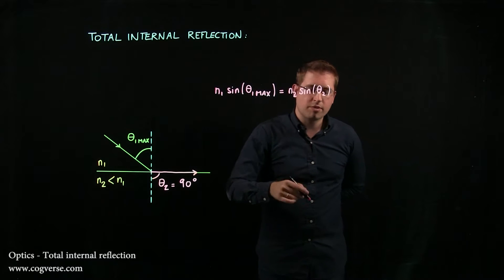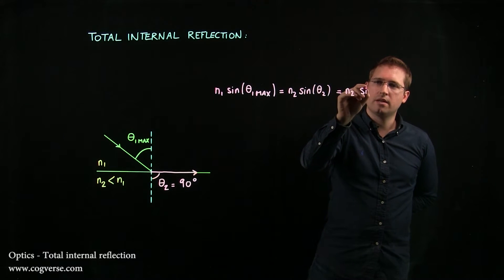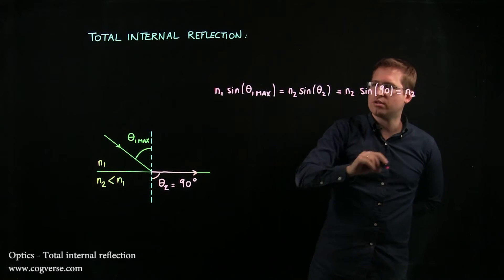But that is equal to N2 sine of 90, and sine of 90 is 1, therefore that's just N2.